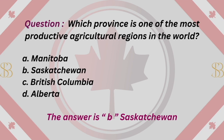Question: Which province is one of the most productive agricultural regions in the world? A. Manitoba. B. Saskatchewan. C. British Columbia. D. Alberta. The answer is B. Saskatchewan.